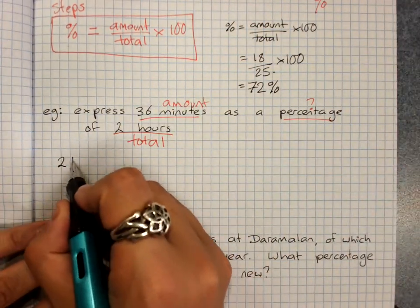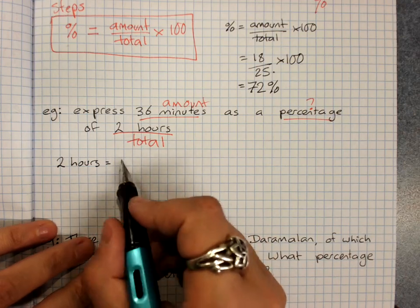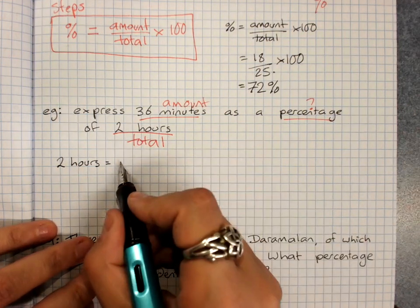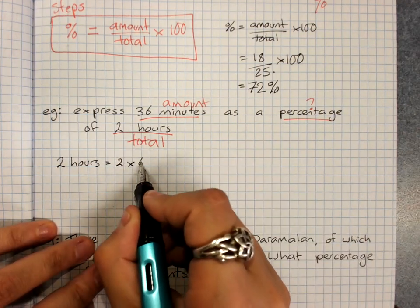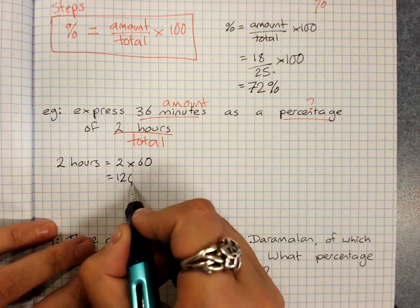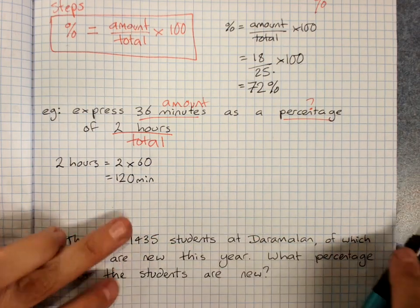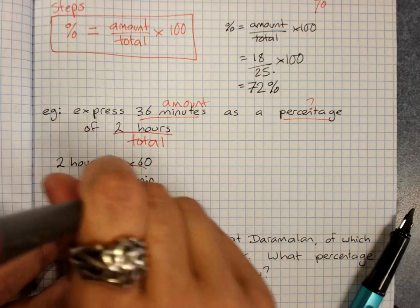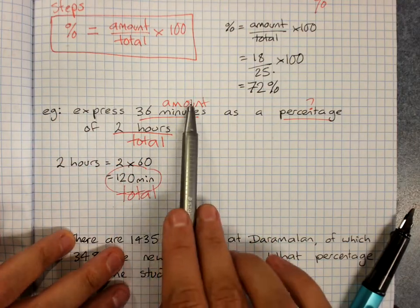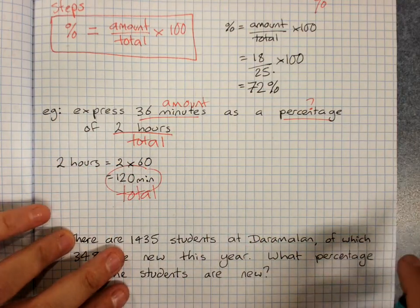So 2 hours is, I hope we can remember, 120 minutes. But if not, it would be two lots of 60, which is 120 minutes. So that's actually my total because my amount and my total have to be in the same units.